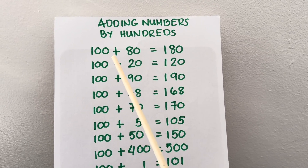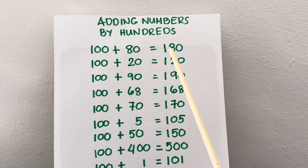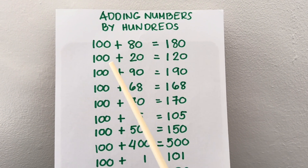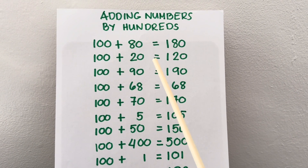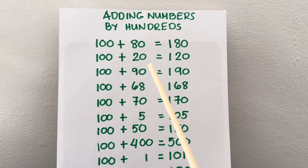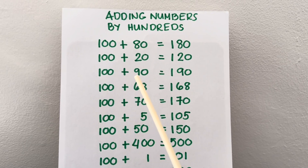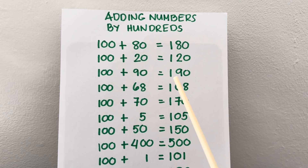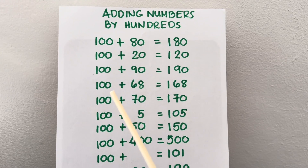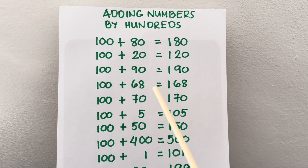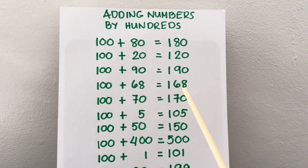100 plus 80 is equals to 180. 100 plus 20 is equals to 120. 100 plus 90 is equals to 190. 100 plus 68 is equals to 168.